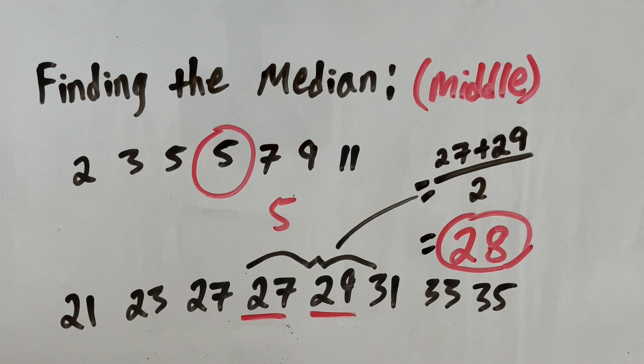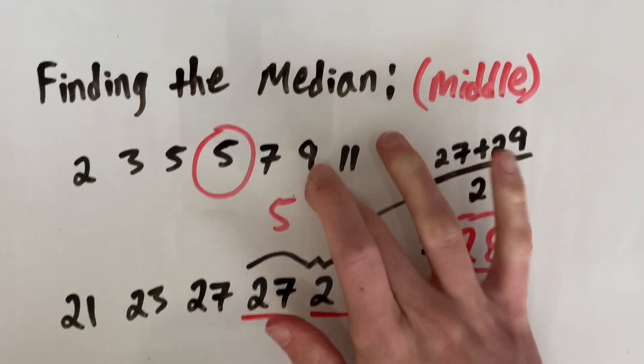That means that our median for our first dataset is 5 and for our second dataset is 28.